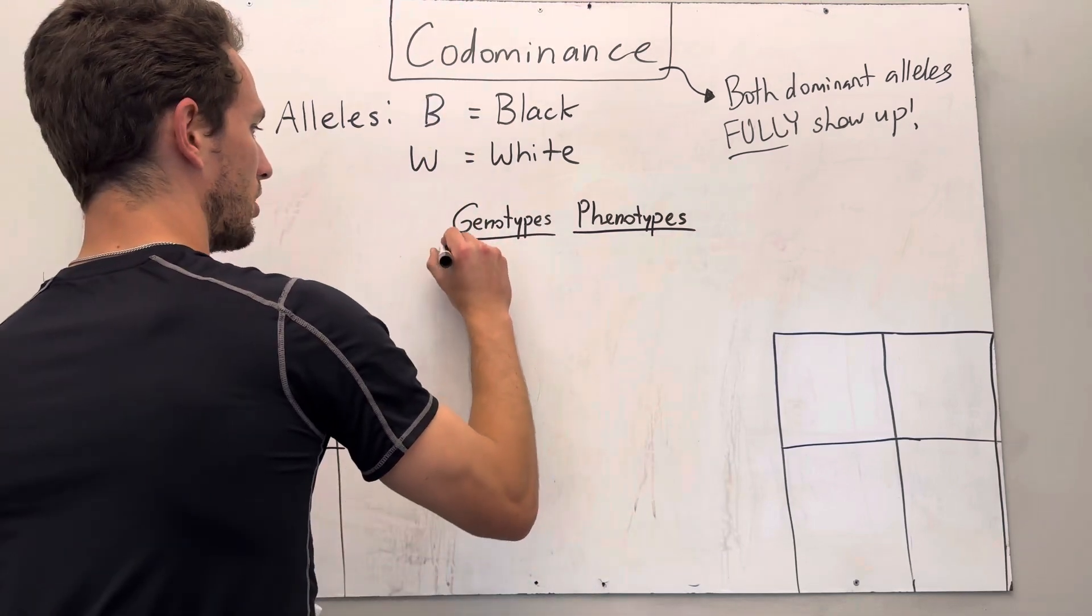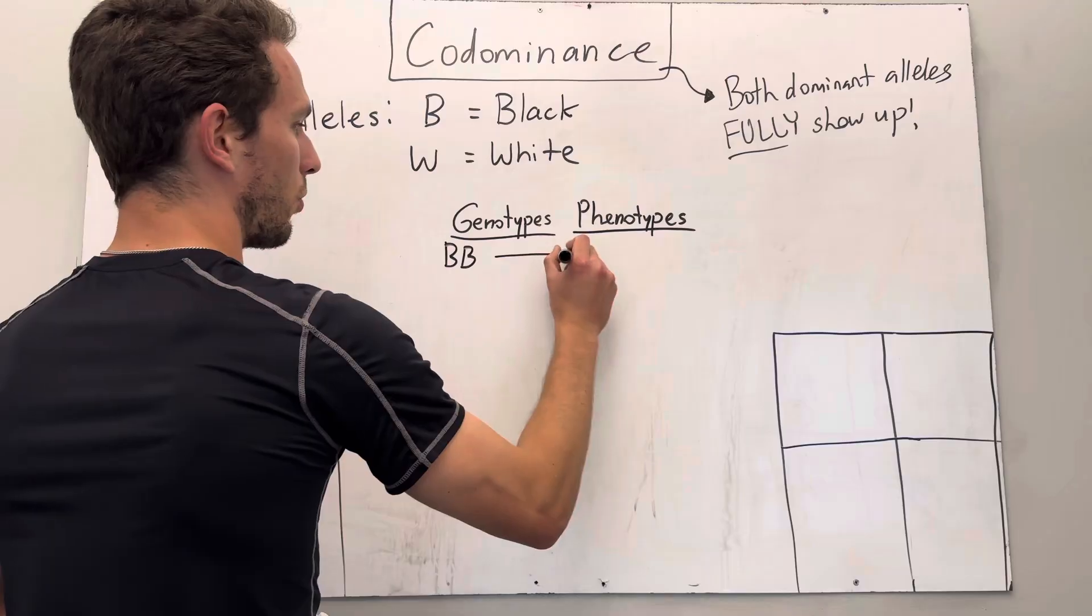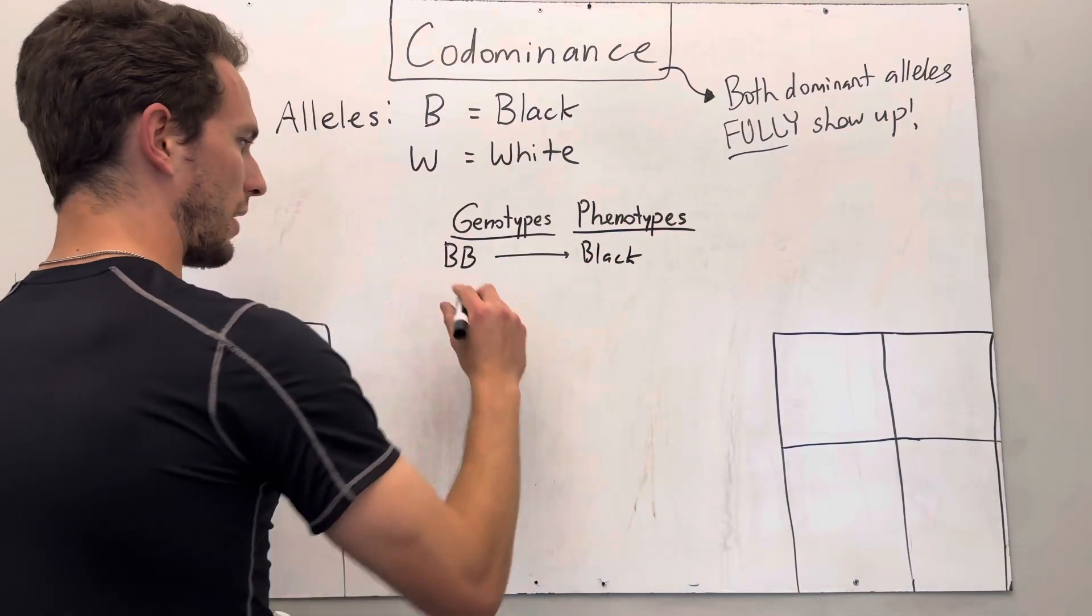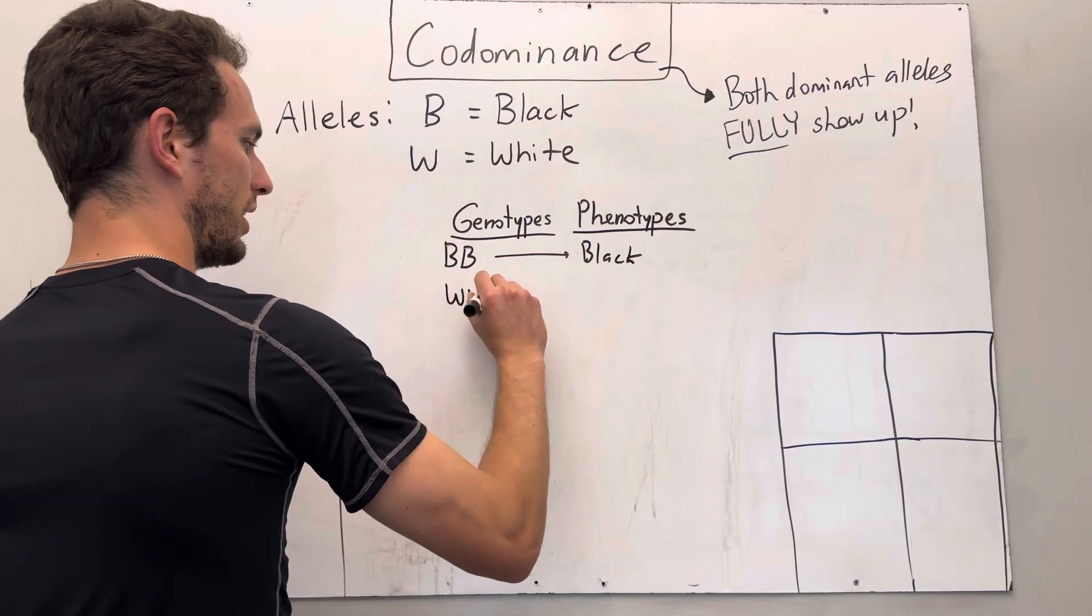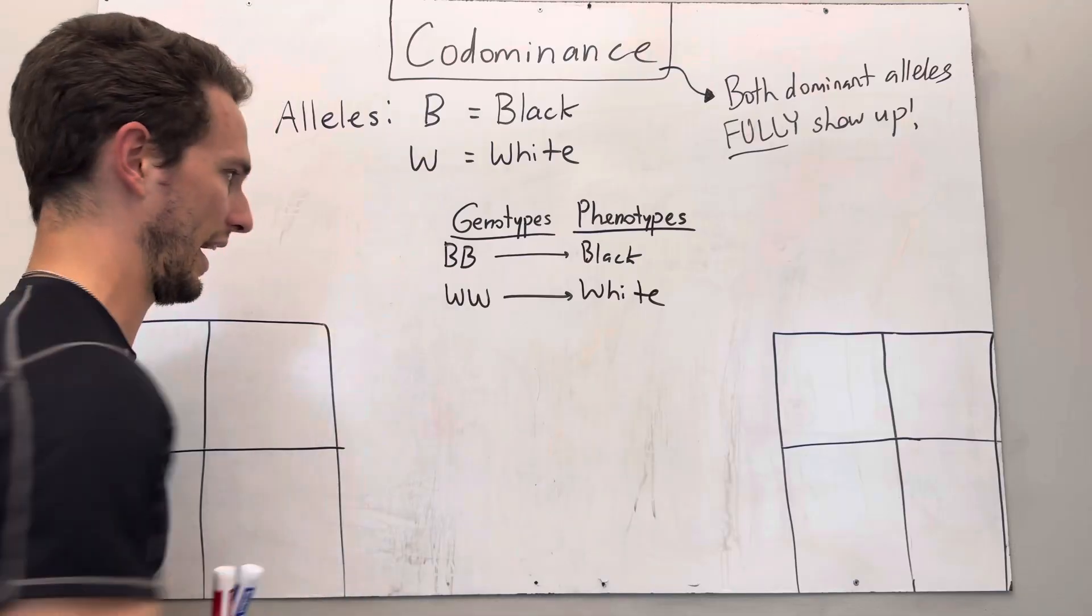We could have perhaps a big B big B genotype, which would code for the phenotype, obviously, a black coat. We could also have two dominant whites to code for a fully white coat.